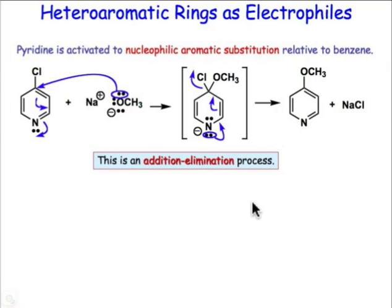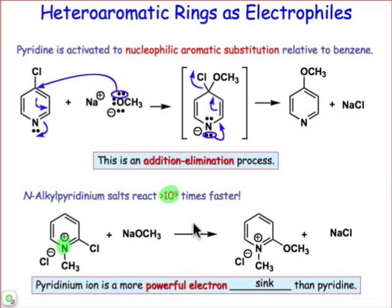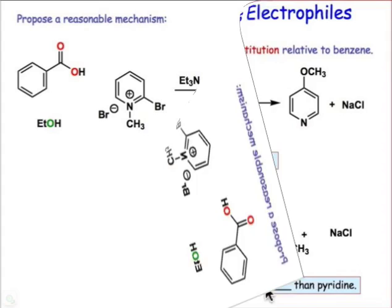It turns out we can really accelerate this reaction by making that ring even more electron deficient and putting formal positive charge in the ring. If we alkylate that nitrogen by the ways we've learned in previous webcasts, we can make that LUMO even lower in energy and that electrophile even more potent. We can make the reactivity a billion times faster simply by making that ring positively charged — it becomes a very good electron sink relative to pyridine.